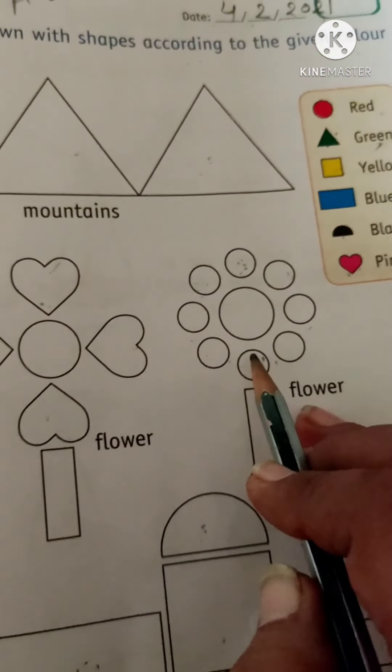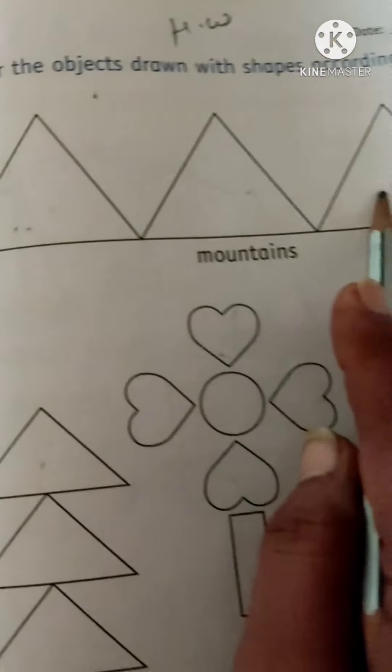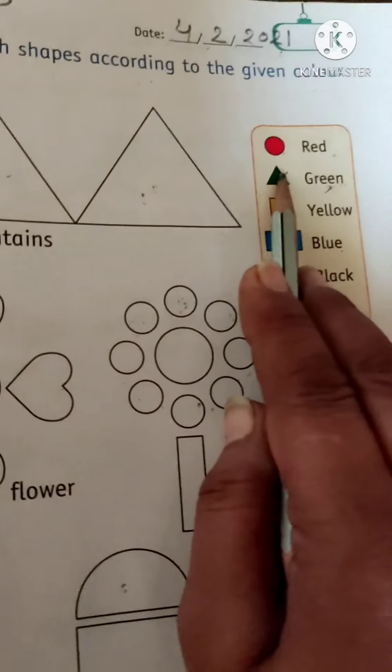Then, green color for the triangle. So, this is triangle. Fill the green color.